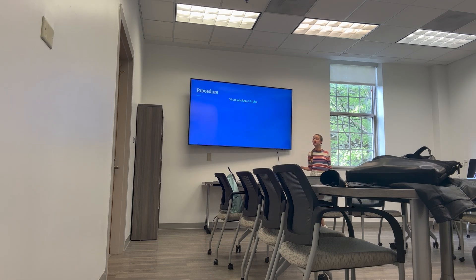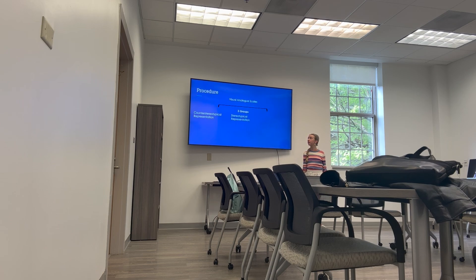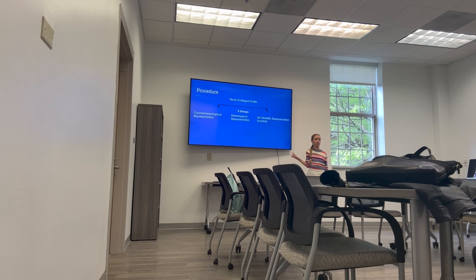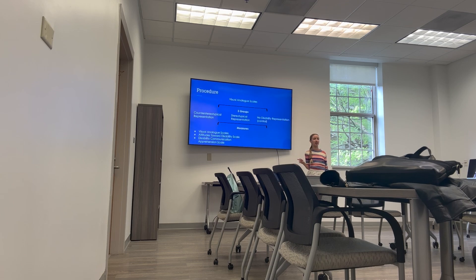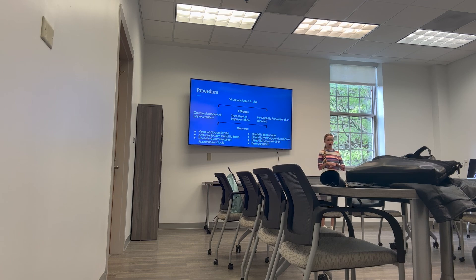The procedure involved participants first completing visual analog scales assessing their current attitudes towards people with disabilities. They were then randomized into one of three groups: the counter-stereotypical representation group, the stereotypical representation group, or the no-disability representation control group. In each group, participants read four vignettes depicting either a person with a disability in a counter-stereotypical way, a stereotypical way, or just an individual succeeding in life with no disability mentioned. After reading the vignettes, participants completed the visual analog scales again, then the Attitudes Toward Disability Scale and the Disability Communication Apprehension Scale. Those who identified as disabled also completed the Disability Microaggression Scale, and all participants completed questionnaires on disability representation and demographics.